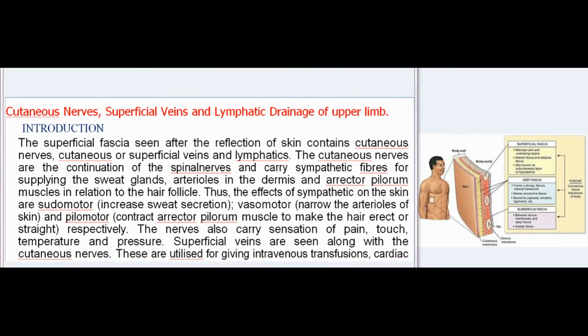Introduction: The superficial fascia, seen after the reflection of skin, contains cutaneous nerves, cutaneous or superficial veins, and lymphatics. The cutaneous nerves are the continuation of the spinal nerves and carry sympathetic fibers for supplying the sweat glands, arterioles in the dermis, and erector pili muscles in relation to the hair follicle.